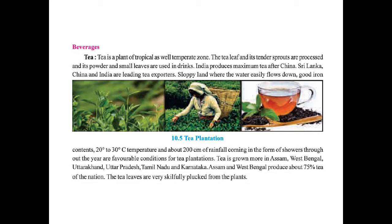Now the next topic is beverages, starting with tea. Tea is the plant of tropical as well as temperate zones. The tea leaf and its tender sprouts are processed and their powder and small leaves are used in drinks. India produces maximum tea after China. Sri Lanka, China, and India are leading tea exporters. Sloppy lands where water easily flows, good iron-rich soil, temperature of 20 to 30 degree Celsius, and about 200 cm of rainfall coming in showers throughout the year are favorable conditions. Tea is grown more in Assam, West Bengal, Uttarakhand, Uttar Pradesh, Tamil Nadu, and Karnataka. Assam and West Bengal produce 75% of the nation's tea.